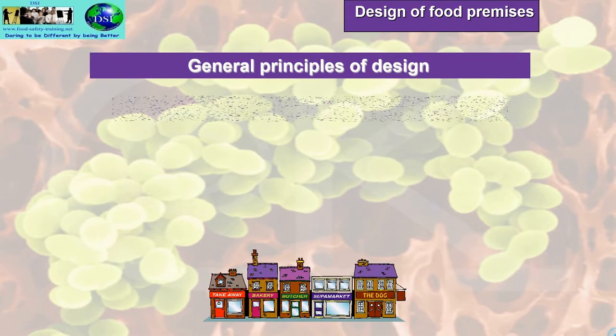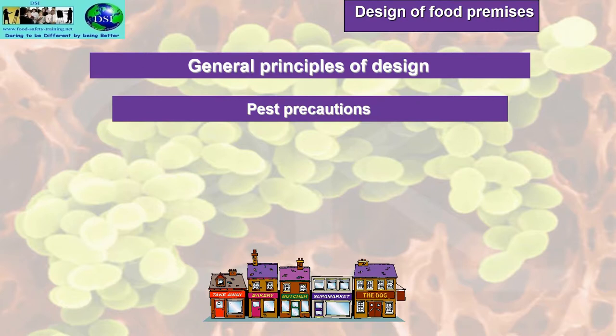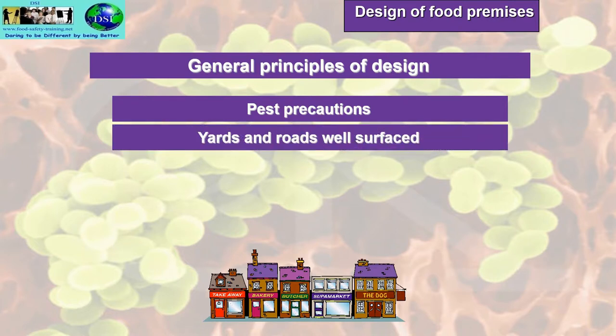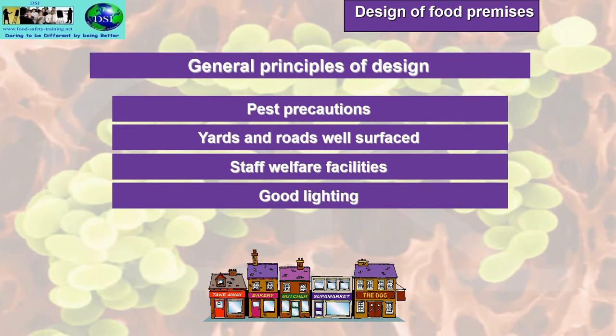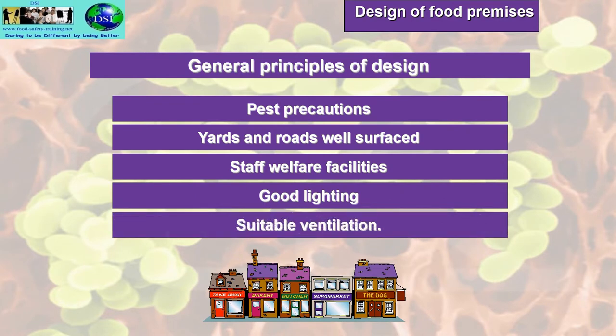General principles of design also include taking all precautions against the ingress of pests, yards and roads should be well surfaced, staff welfare facilities should be provided as required by health and safety law, and there should be good lighting and suitable ventilation. Where possible provide natural lighting, though many kitchens rely on artificial lighting. Extraction canopies are needed wherever cooking takes place.